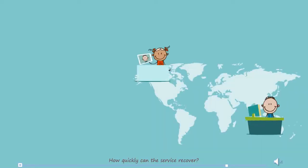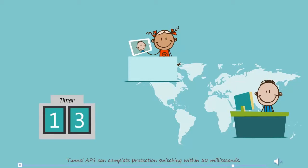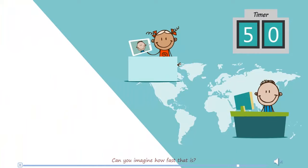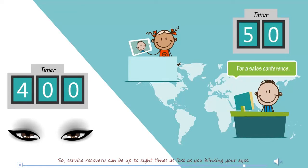How quickly can the service recover? My sweetheart is waiting for me. Tunnel APS can complete protection switching within 50 milliseconds. Can you imagine how fast that is? A blink of an eye takes about 400 milliseconds. So service recovery can be up to 8 times as fast as you blinking your eyes.